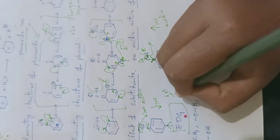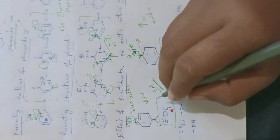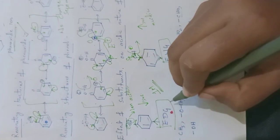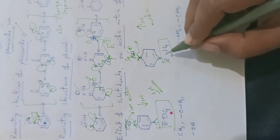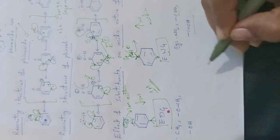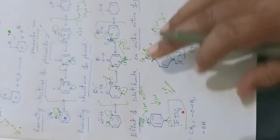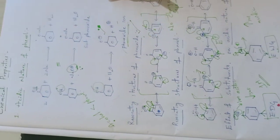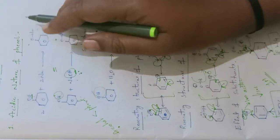This concept is very important. When an electron donating group is present on phenol, acidic nature decreases. When an electron withdrawing group is present, acidic nature increases. That is about the first chemical property of phenol, which is its acidic nature.